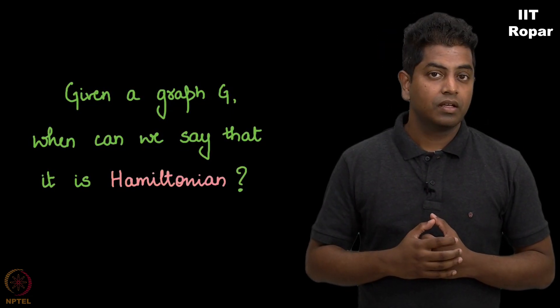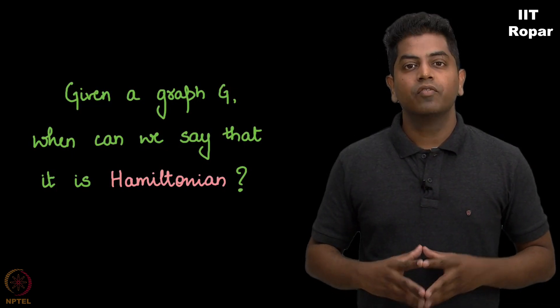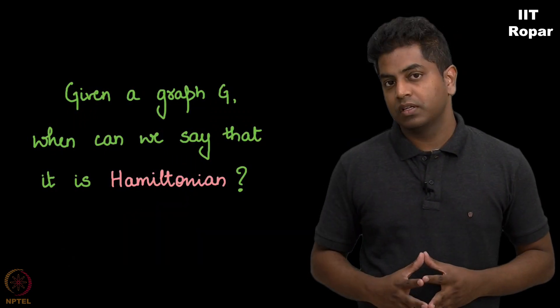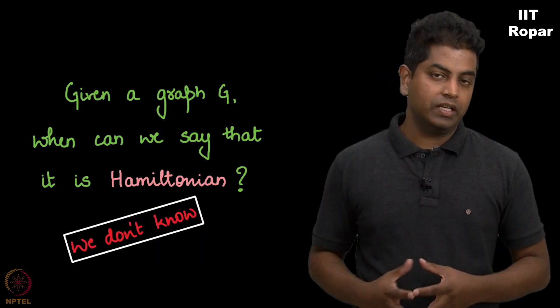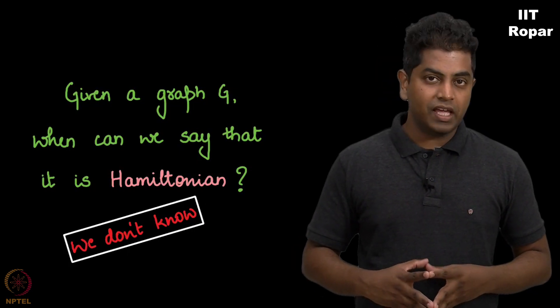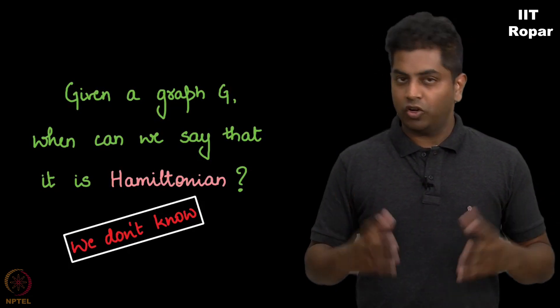The answer is we don't know. This is one of the toughest problems in mathematics and computer science. We have not figured out if there is an easy way to determine whether a graph has a Hamilton path or not.